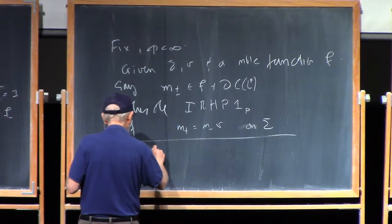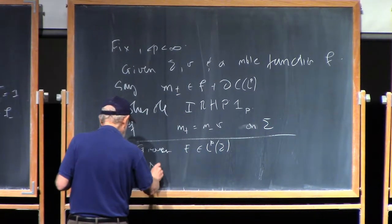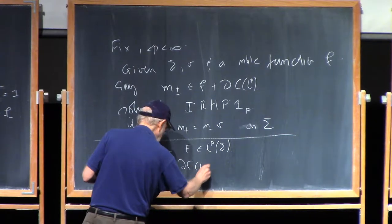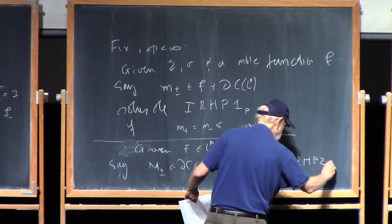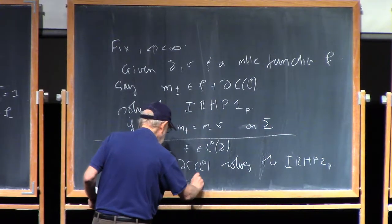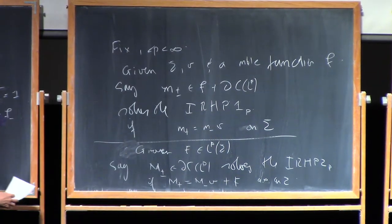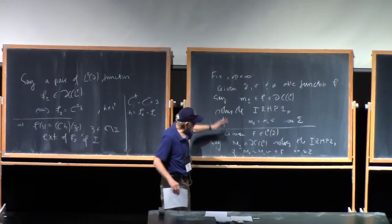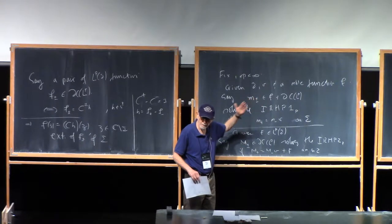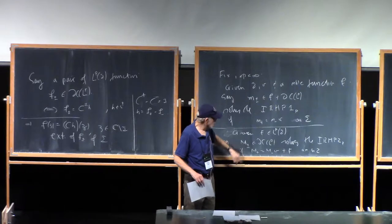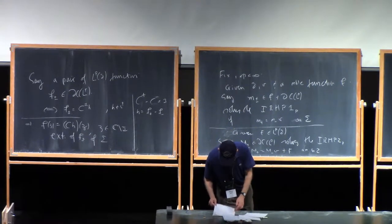Given some function now which belongs to LP of sigma, we say M±, which belongs to the boundary of type 2 in LP, if M+ equals M− times V plus F almost everywhere. You notice the big difference between them: M± is something which automatically has an analytic continuation off sigma, and M± might not, because you don't know anything about F.